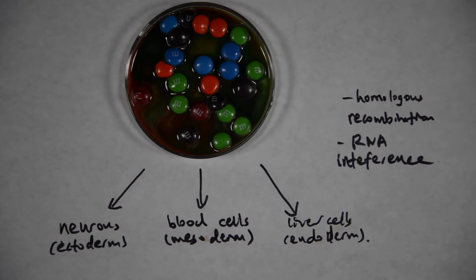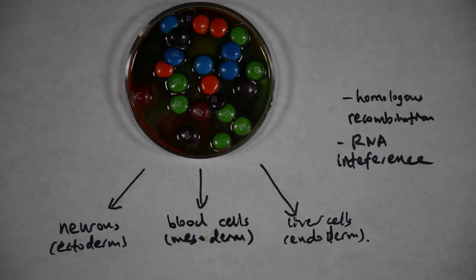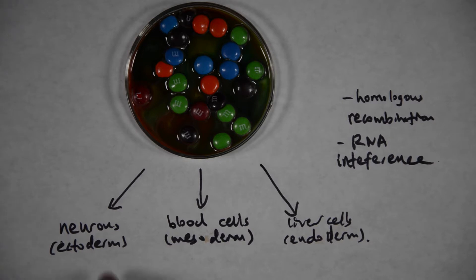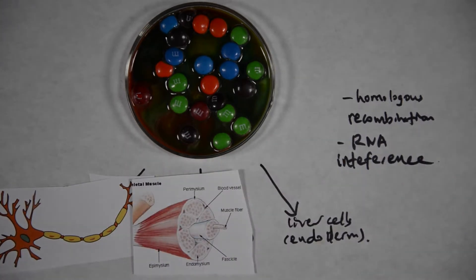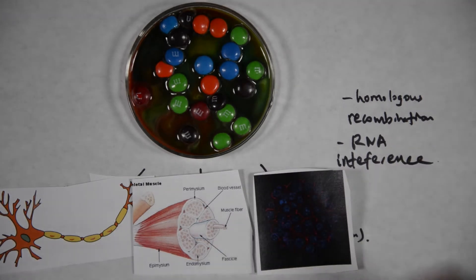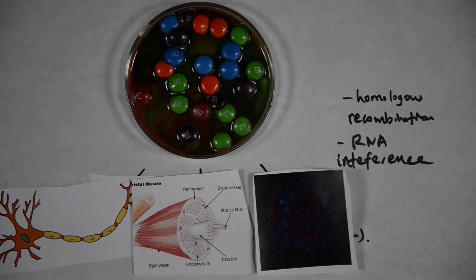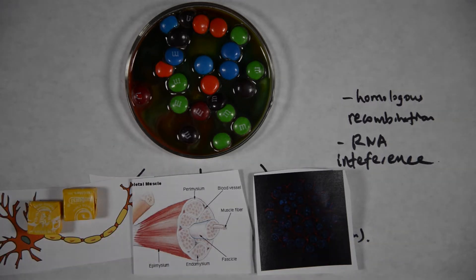Every embryonic stem cell usually has three layers. The inner layer is called ectoderm, the middle layer is called mesoderm, and the outermost layer is called endoderm. Through different stimulation techniques like homologous recombination and RNA interference, the embryonic stem cells can develop into many kinds of cells, including neurons, blood cells, muscle cells, and liver cells or other inner organ cells.